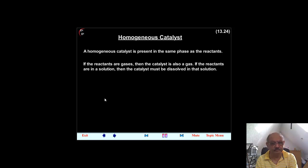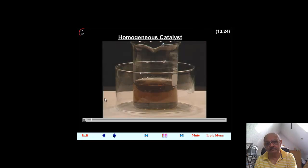A homogeneous catalyst is present in the same phase as the reactants. If the reactants are gases, then the catalyst is also a gas. If the reactants are in a solution, then the catalyst must be dissolved in that solution. The reactants and the catalyst are mixed with the solvent, water, to make a homogeneous red aqueous solution. The catalyst produces the red color.